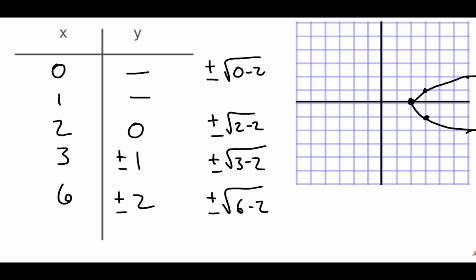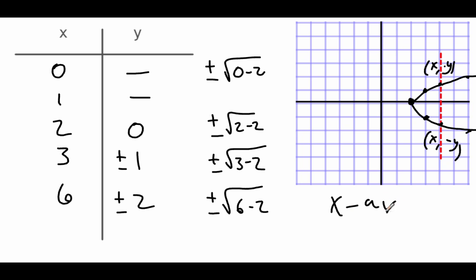If we draw a vertical line through our picture, we can highlight that for any x value we have a point (x, y) above the x-axis and a point (x, -y) below it. That tells us this graph has x-axis symmetry.